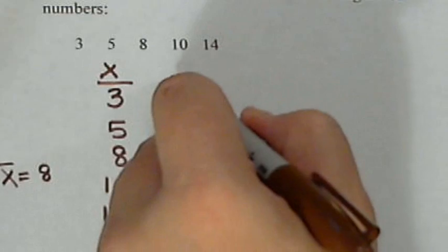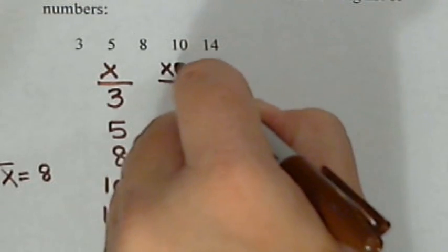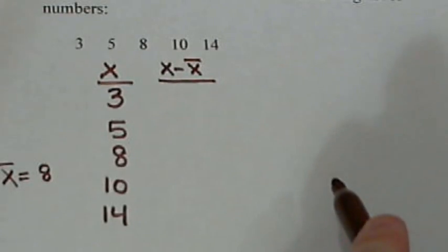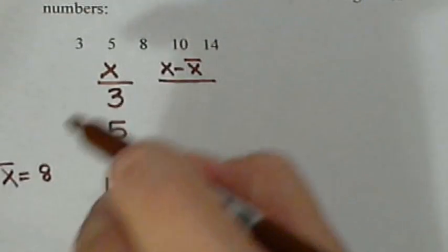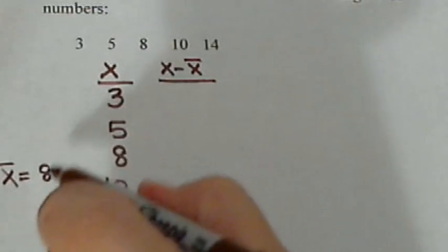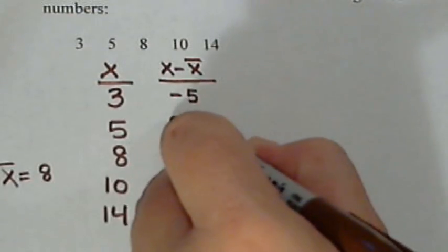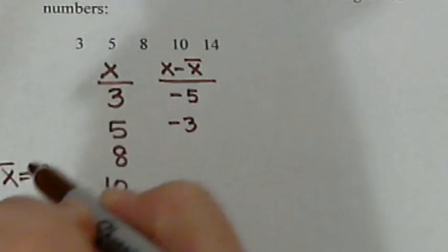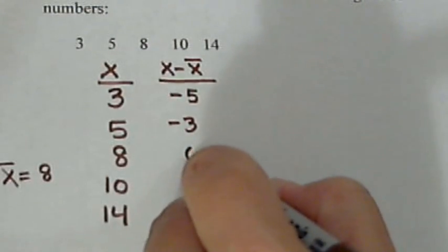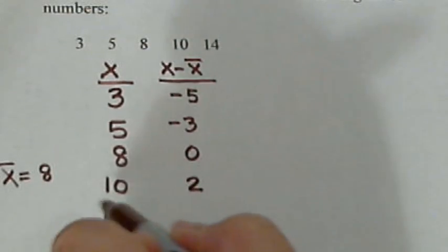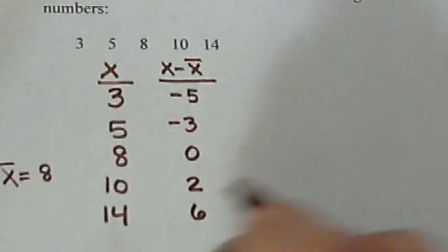Now, we need that because our next column is we're going to subtract the mean. So, we have 3 minus 8 is negative 5. 5 minus 8 is negative 3. 8 minus 8 gives us 0. 10 minus 8 gives us a 2. And 14 minus 8 gives us 6.